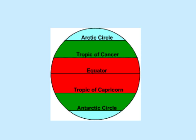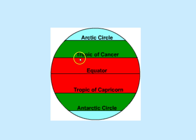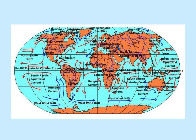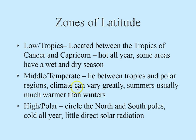Zones of latitude: the low zone, or the tropics, is the area between the Tropics of Cancer and Capricorn. The middle, or temperate areas, lies between the tropics and the polar regions — climates vary greatly here, summers are usually warm, winters are cooler — that's where we are. And finally, the high zone, the polar areas at the north and south poles, have very little sun and are cold all year long.